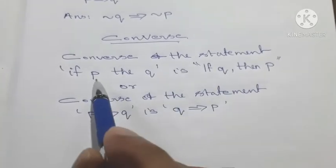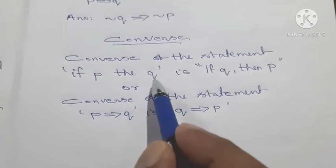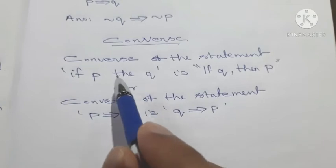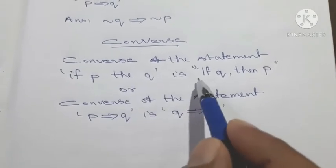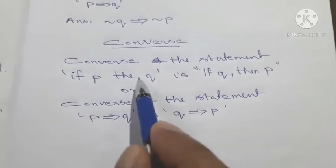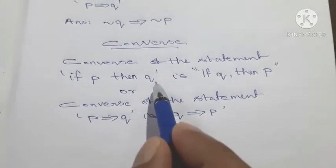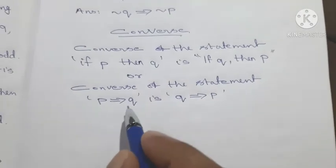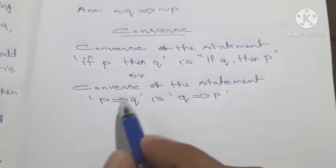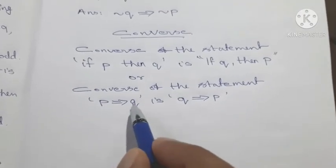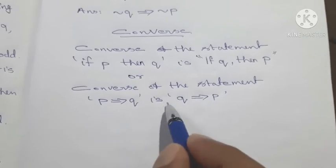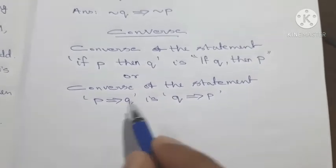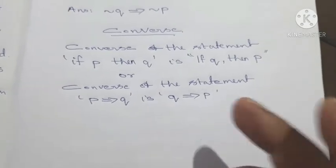The converse of the statement 'if p then q' is 'if q then p'. The converse of p implies q is q implies p. This covers all these questions.